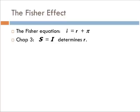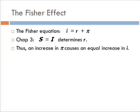If we begin with the Fisher equation, we move on to this idea from Chapter 3 that savings equals investment, which determines the real interest rate. Within that loanable funds framework from Chapter 3, we get the real interest rate. The real interest rate R is determined by this loanable funds framework — it essentially equates savings and investment, which is determined independently of the price level or the inflation rate.